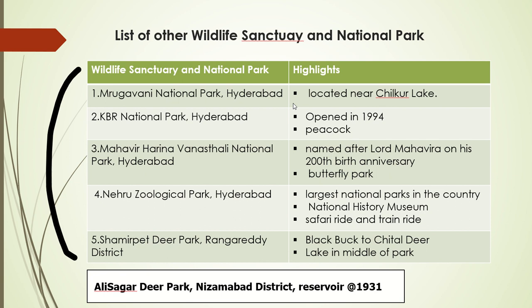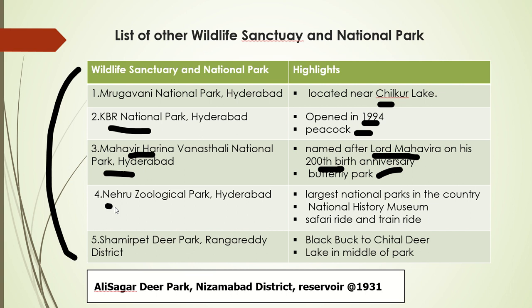Other important national parks: Mrugavani National Park, Hyderabad — located near Chilkuru Lake. KBR National Park, opened in 1994 — main species is peacock. Mahavira Harina Vanaspathi National Park, Hyderabad — named after Lord Mahavira on his 200th birth anniversary and is a butterfly park. Nehru Zoological Park, Hyderabad — the largest national park in India, which also has a natural history museum, safari ride, and train ride. Shamirpet Deer Park in Rangareddy district — main species are black duck and chital deer, with a lake in the middle of the park.